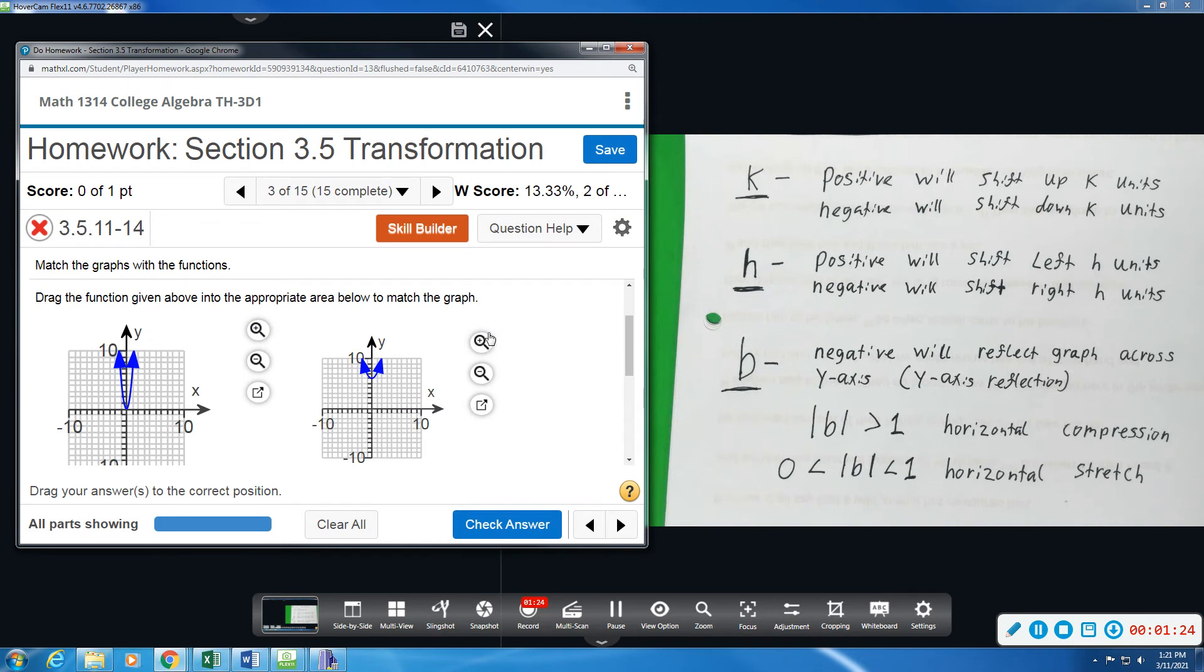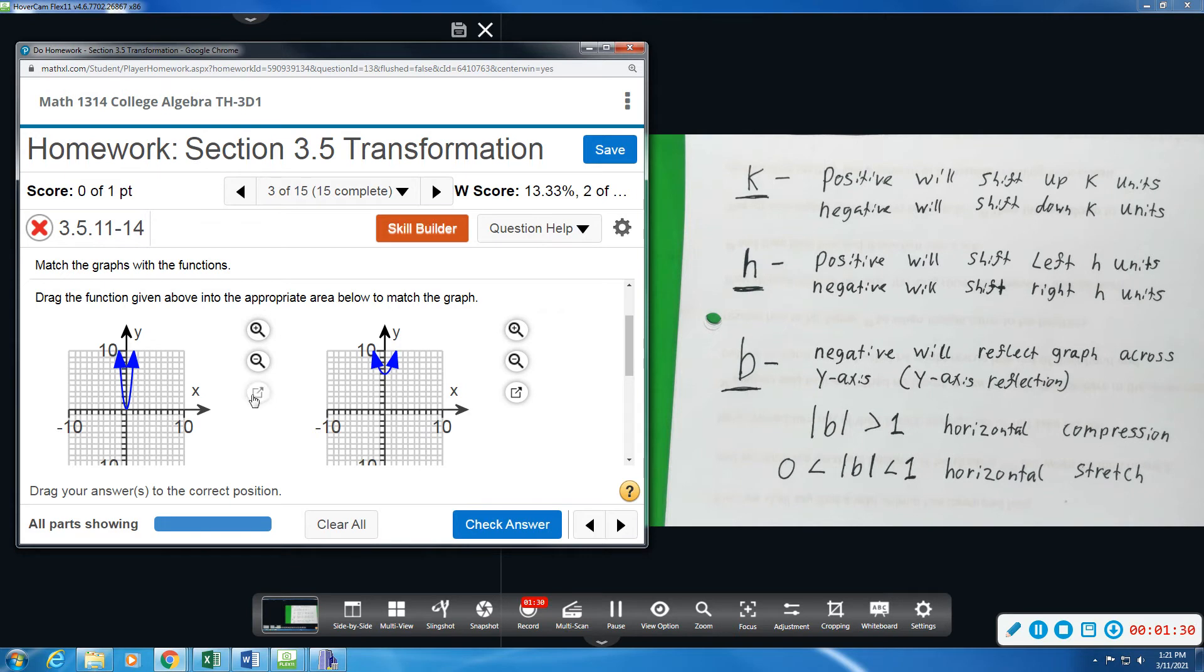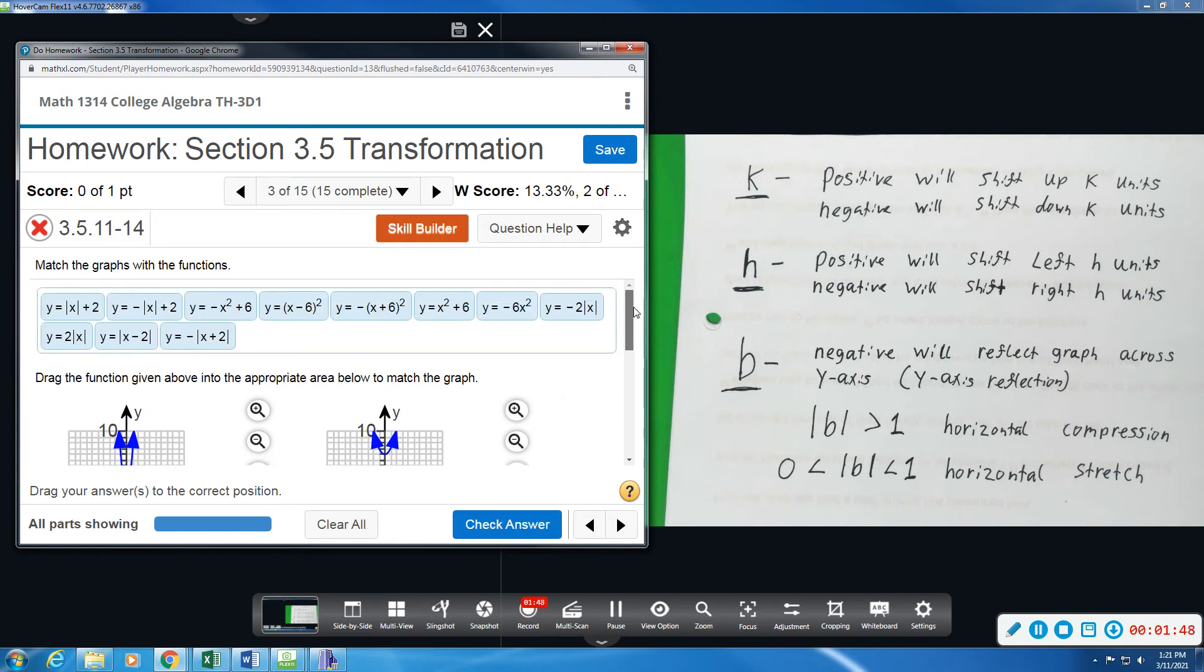The second option, the only thing that we know for sure - I can't tell if it's been stretched or compressed or anything like that - but I do know that it has been translated, shifted up one, two, three, four, five, six units. So the K value will shift it up, so I'm looking for a plus six, and I will start from there. And then if I notice more than one, then we'll change it.